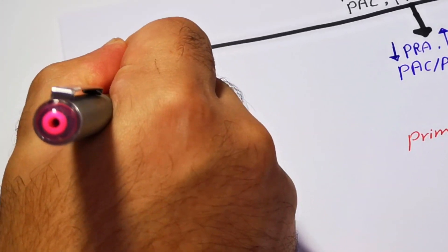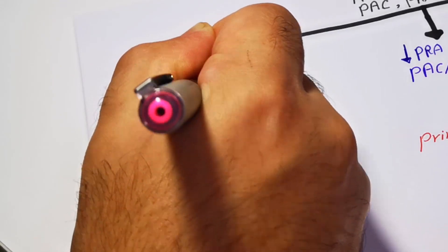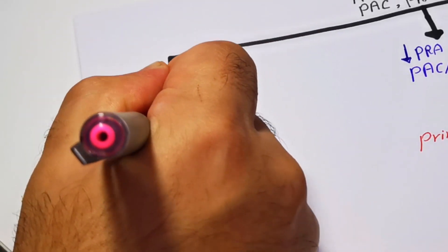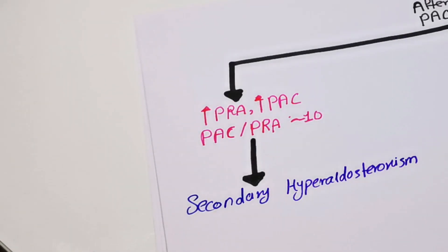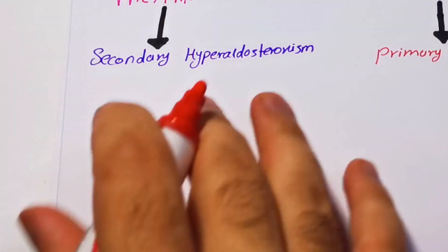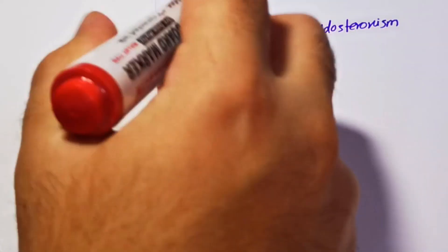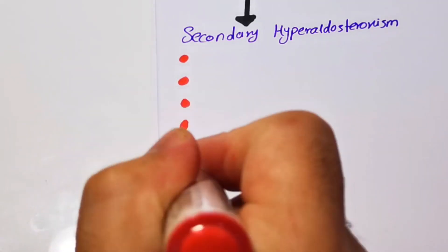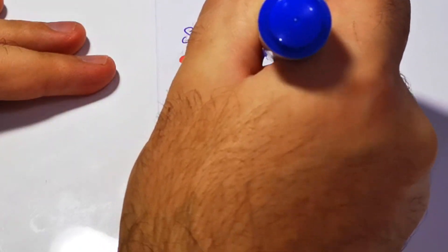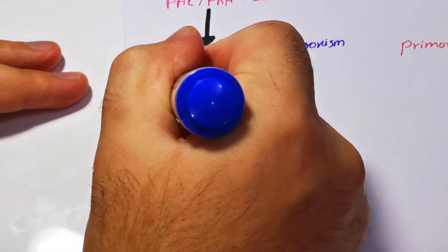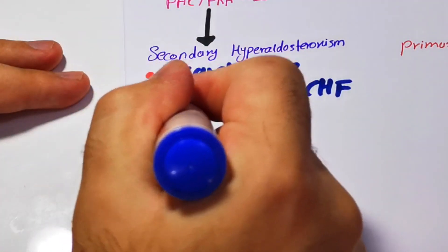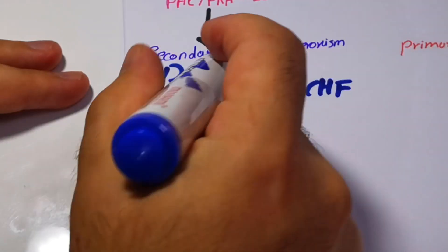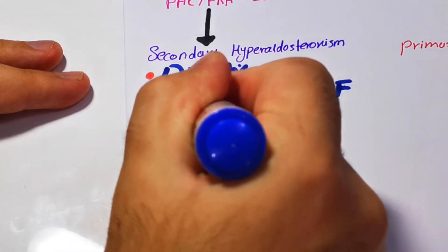If the patient has increased plasma renin activity as well as increased plasma aldosterone concentration, but the ratio is decreased — usually around 10 — the patient has secondary hyperaldosteronism. Differential diagnoses to keep in mind include diuretic use and cirrhosis or congestive heart failure, both of which enhance activation of the renin-angiotensin-aldosterone axis.